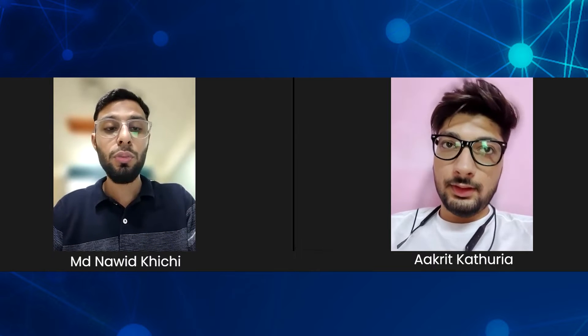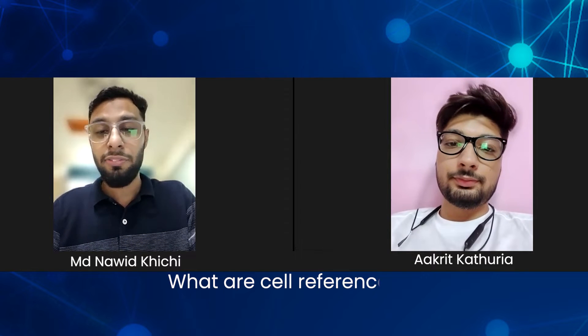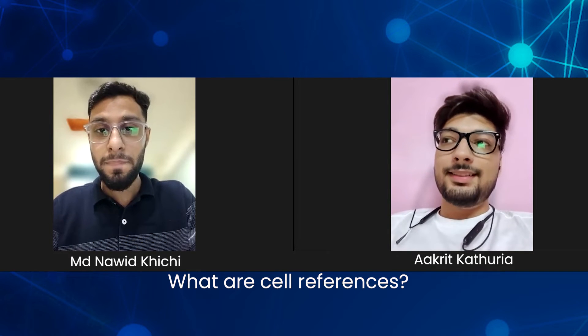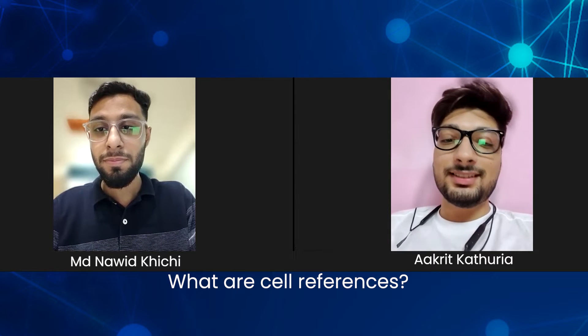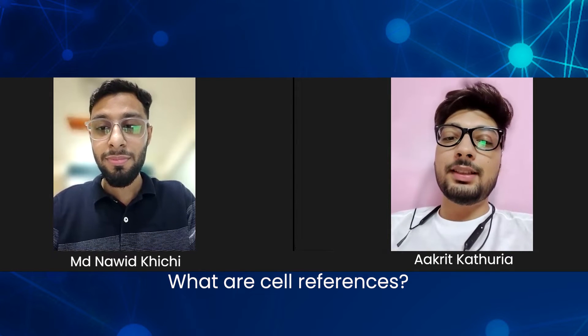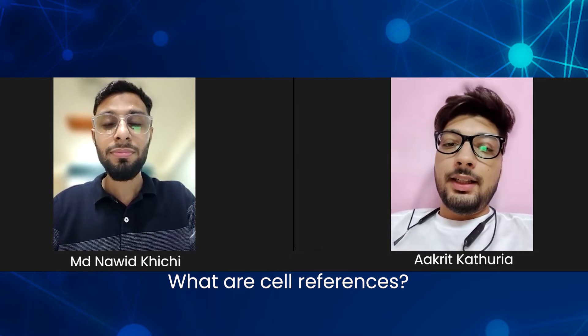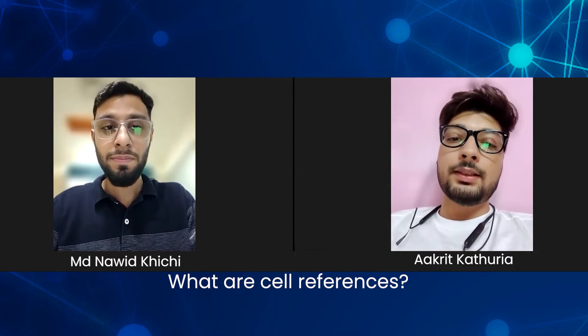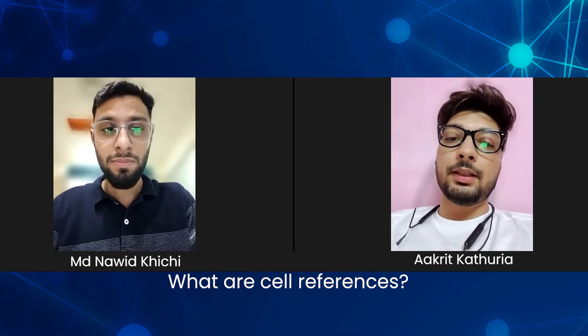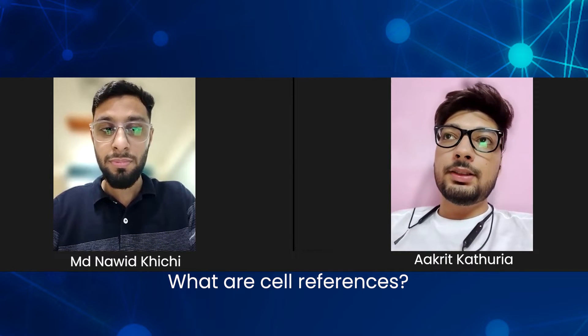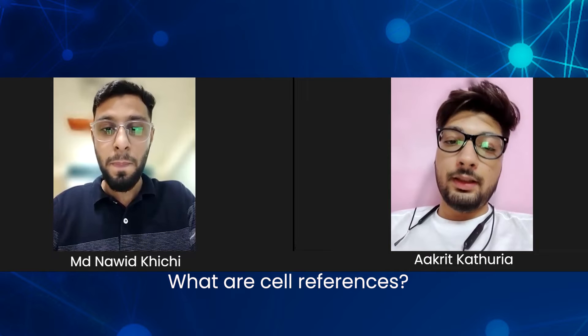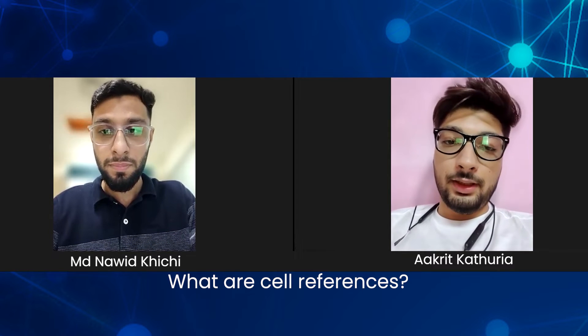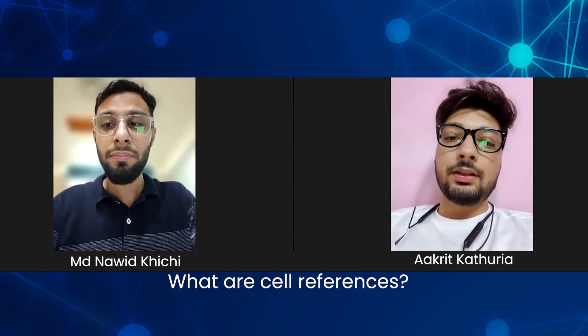Tell me about cell referencing. Cell references are addresses that identify the location of a cell. There are three types: absolute, relative, and mixed. Relative cell references change when we copy a formula; absolute remains constant every time; and mixed is a combination of both.